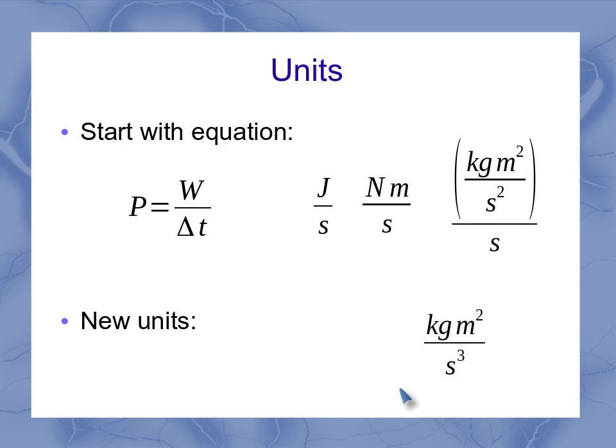So what we do with power is we actually define a new unit, and that new unit is called a watt. Watt was a scientist who did a lot of early work on power. And we simplify that watt as a capital W. So a watt is equal to a kilogram meter squared per second cubed, which is also equal to a newton meter per second or a joule per second.